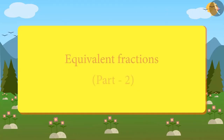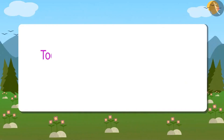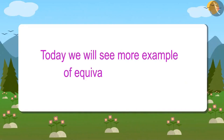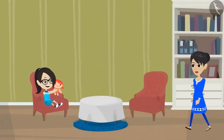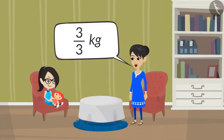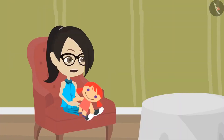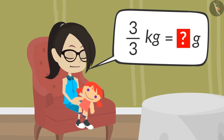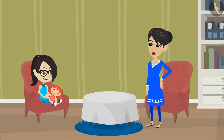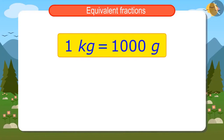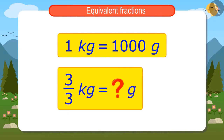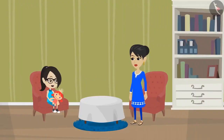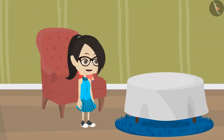Equivalent Fractions, Part 2. Today we will see more examples of equivalent fractions. Vandana, go get 3 upon 3 kilograms of potatoes from the market. Mummy, please tell me in grams — how many grams of potatoes are in 3 upon 3 kilograms? Vandana, you know about fractions, right? One kilo has a thousand grams, so now you find out how many grams will be there in 3 upon 3 kilograms and bring that much of potatoes.